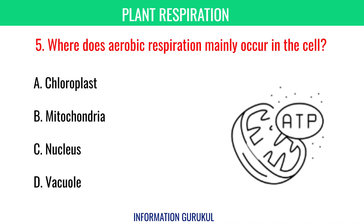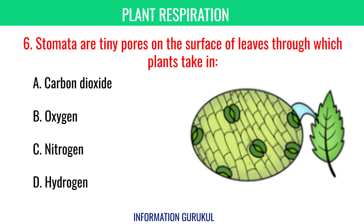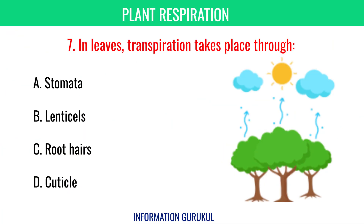Where does aerobic respiration mainly occur in the cell? Mitochondria. Stomata are tiny pores on the surface of leaves through which plants take in carbon dioxide. In leaves, transpiration takes place through stomata.